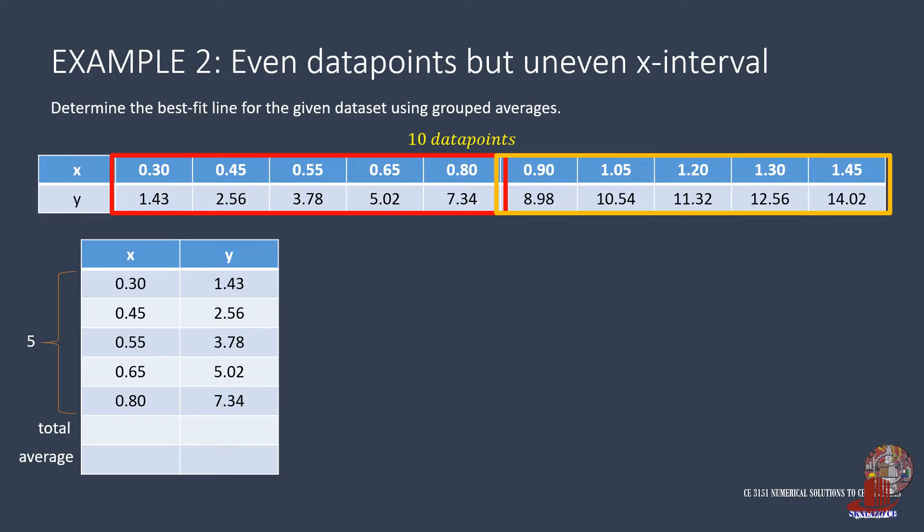Copy their corresponding y counterparts. Add all x values to have 2.75. The average is then 2.75 divided by 5, giving 0.55. For y, we get 1.43 plus 2.56, add 3.78 and 5.02 plus 7.34 as equal to 20.13. And divide this by 5 to have the y average as 4.026.